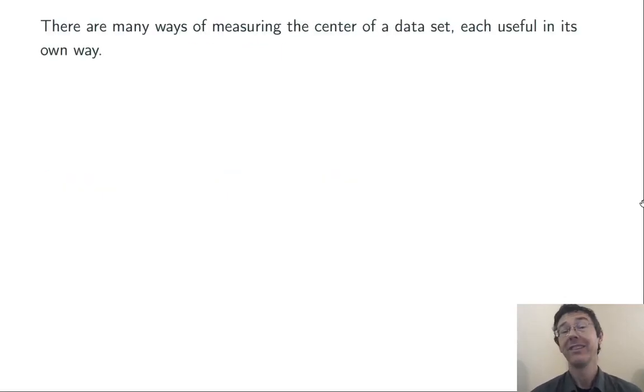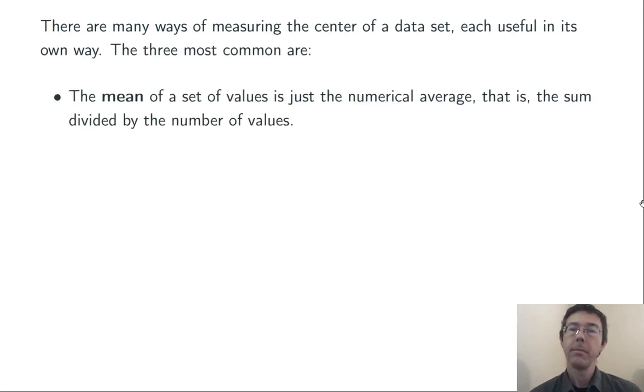These are all ways of measuring the center of a data set, and each one is useful in its own way. Let's run through the definitions really quickly. The mean is just the numerical average, so you add up all the values in the set and you divide by the number of values.